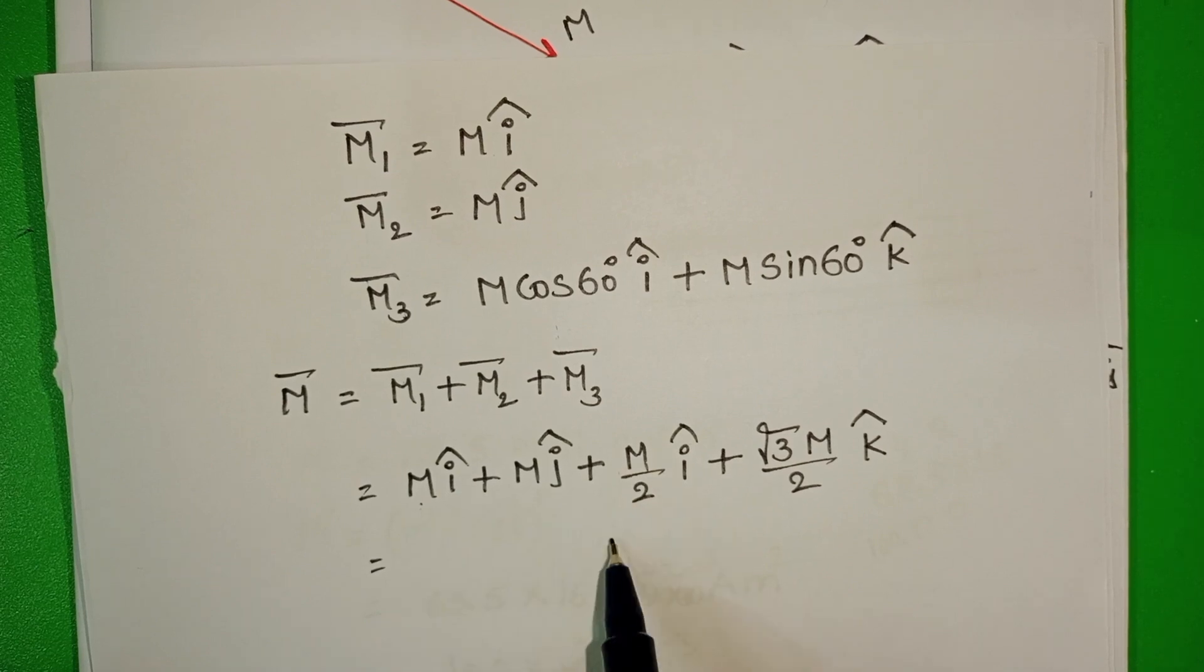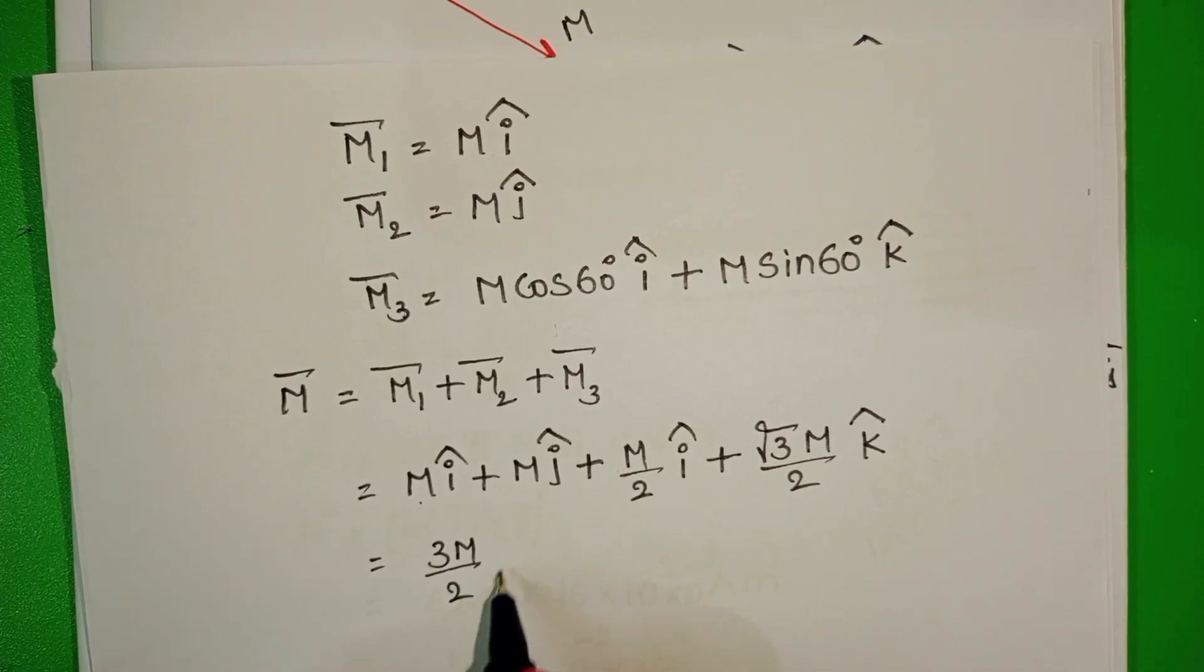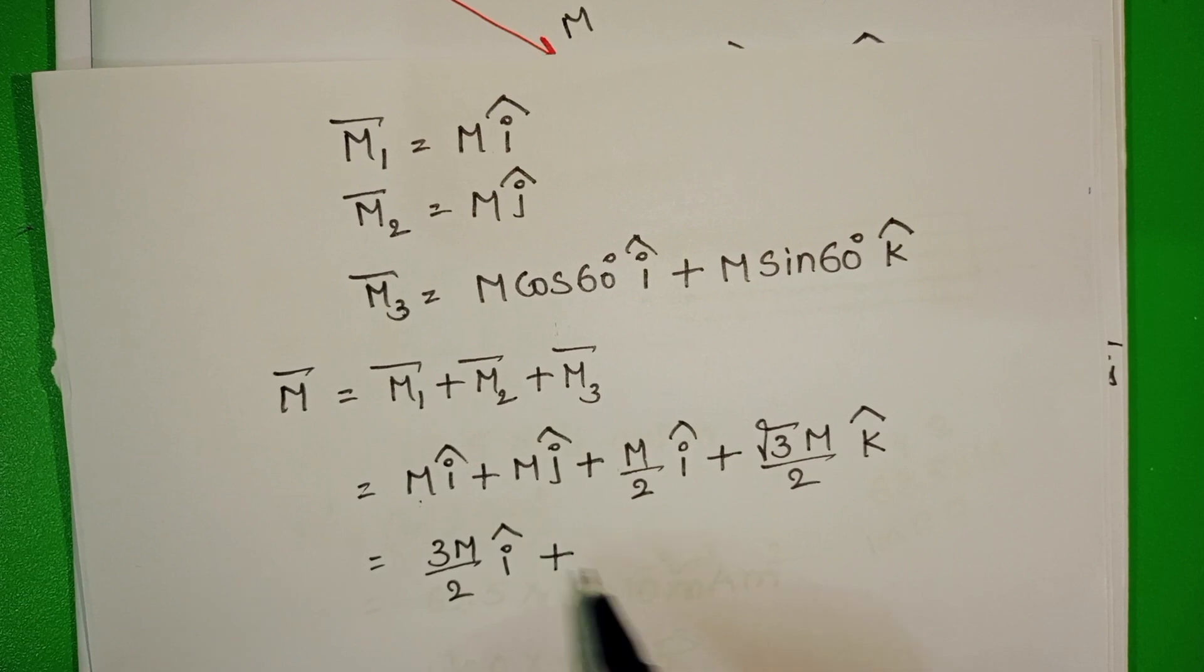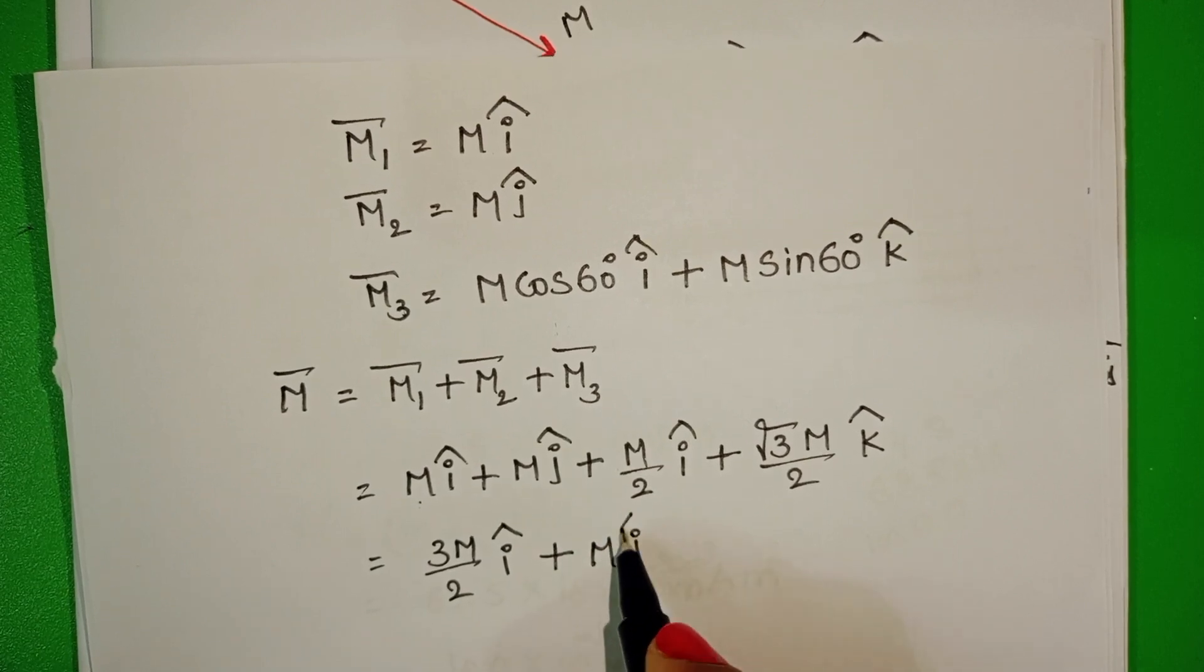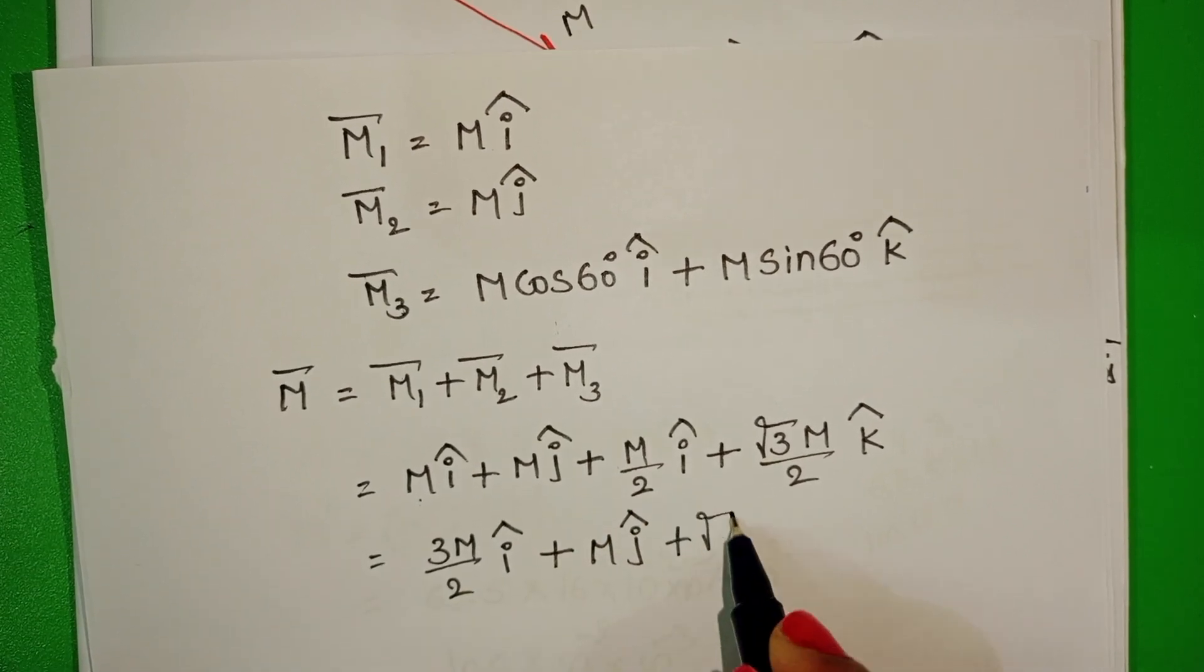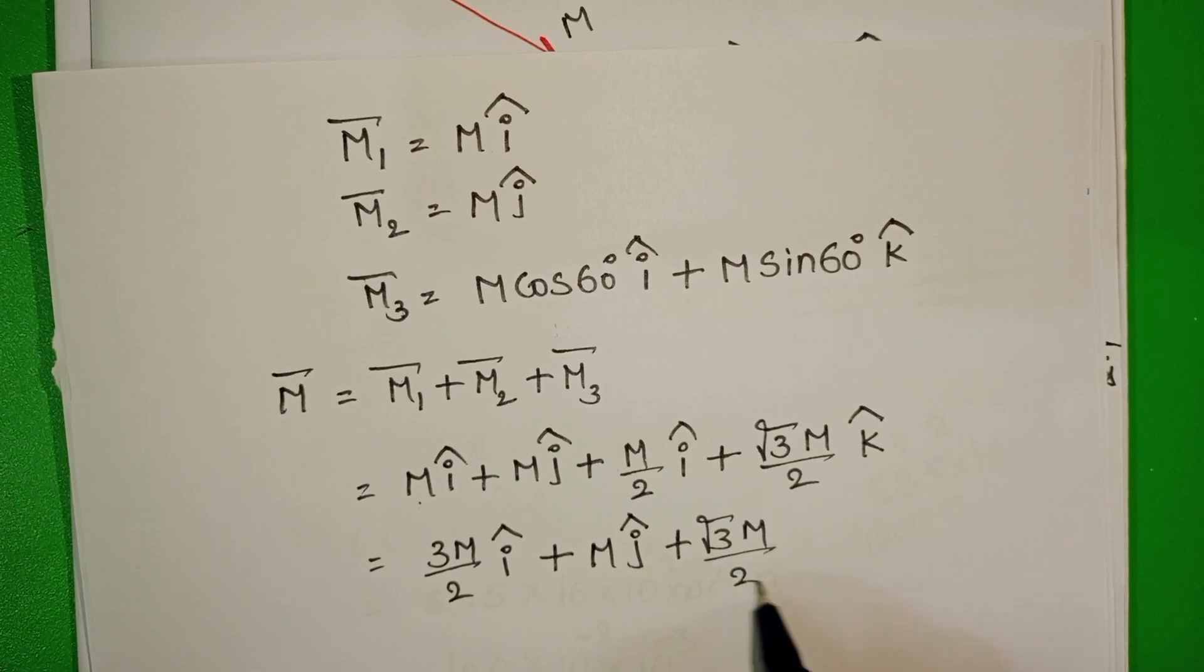M plus M plus M by 2 gives 3 M by 2 i cap plus M j cap plus root 3 M by 2 k cap.